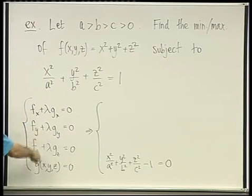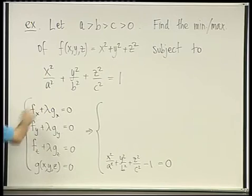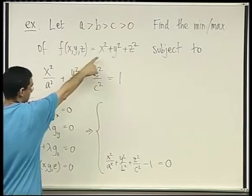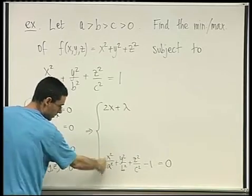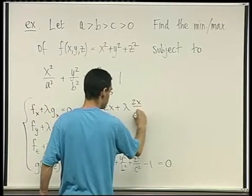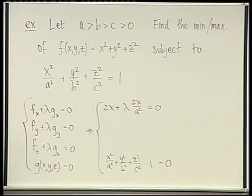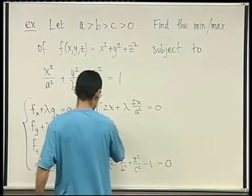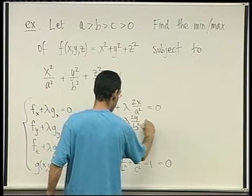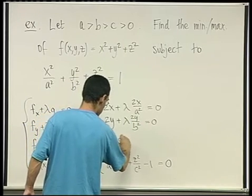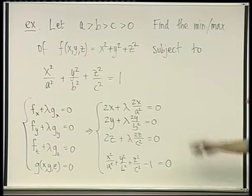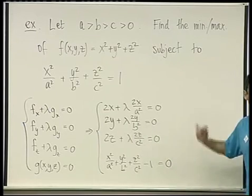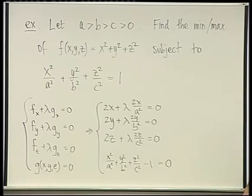Now let's write the three equations originating from the Lagrange theorem. The derivative of f with respect to x is 2x, and the derivative of g with respect to x is 2x/a². Since everything is symmetric in terms of the variables — except for a, b, and c being different — the equations are: 2x + λ(2x/a²) = 0; 2y + λ(2y/b²) = 0; and 2z + λ(2z/c²) = 0. These are four equations in four variables x, y, z, and lambda — not linear.